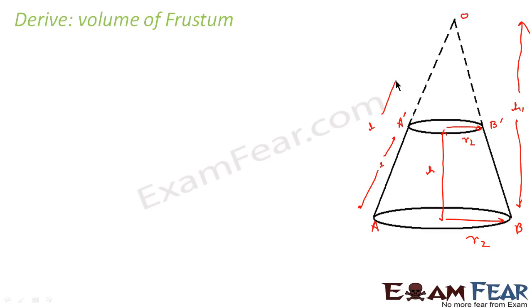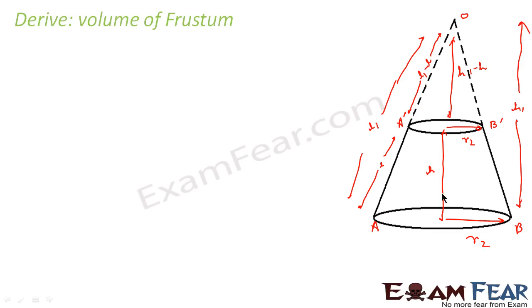Let me assume the slant height of the whole cone will be L1. So the slant height of the small cone will be L1 minus L. Similarly, the whole height is H1 and this height is H, so the remaining part will be H1 minus H. Now I have to derive the surface area and the volume. The only unknowns here are L1 and H1.